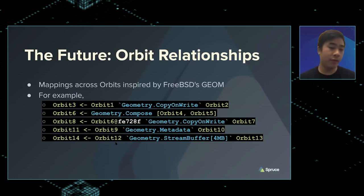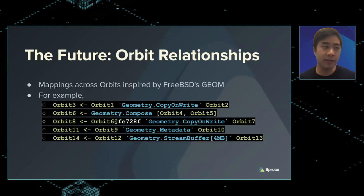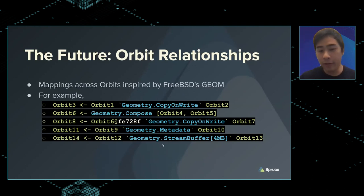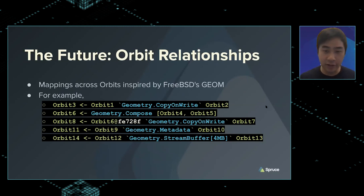If we have an orbit with streaming objects — by default streaming objects in Kepler are bare with exactly-once delivery — but if you want replay, say the last 30 seconds of video, you might add a four-megabyte stream buffer relationship to another orbit that can store up to four megabytes per stream, giving you replay functionality.